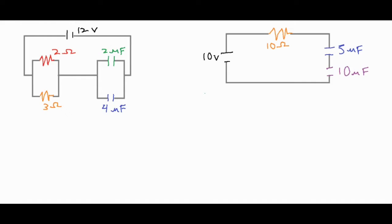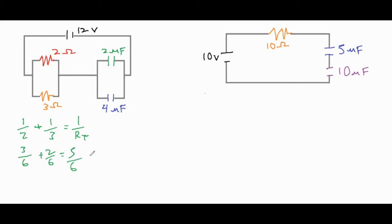Initially, as the electrons flow around, the two capacitors are temporarily going to act as a short and we're just going to have a regular current flowing through the two and three ohm resistors. Because they are wired up in parallel, we add up the inverses of each of them and set that equal to one over RT. Rewriting those fractions: three over six plus two over six equals five over six, which equals one over RT. Cross-multiplying, RT comes out to six over five, or 1.2 ohms.